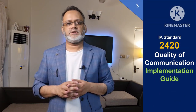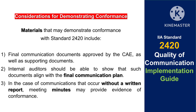Materials which may demonstrate conformance with standard 2420 include final communication documents approved by the Chief Audit Executive as well as supporting documents. Internal auditors should be able to show that such documents align with the final communication plan. In cases of communications that occur without a written report, meeting minutes may provide evidence of conformance.